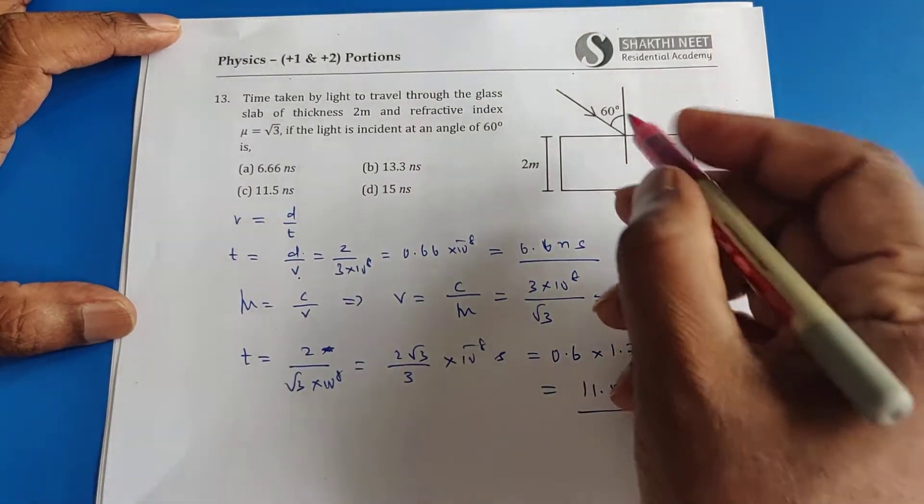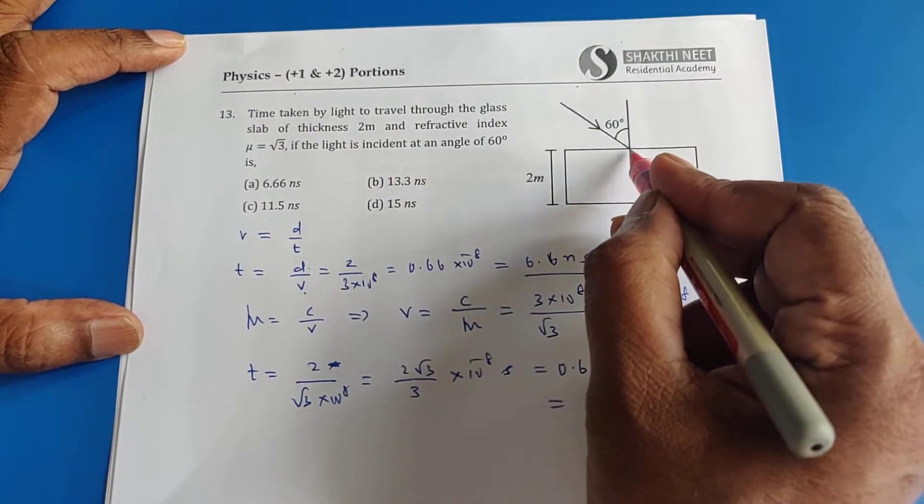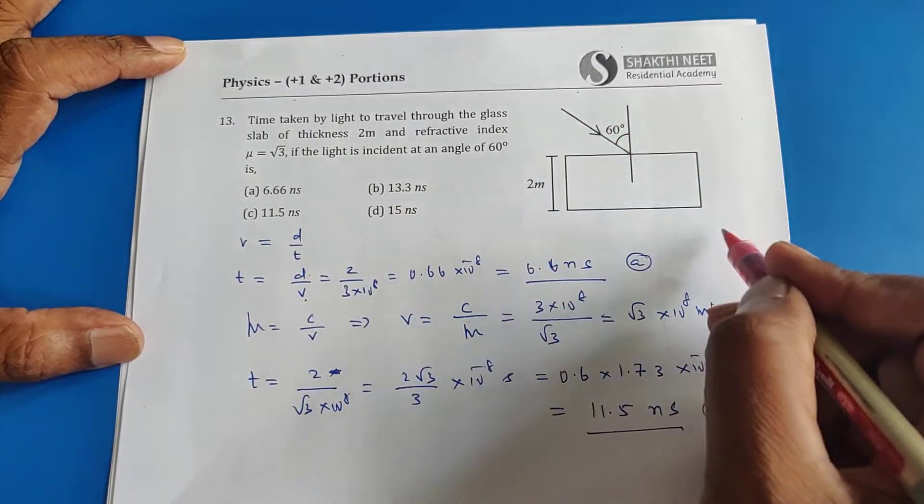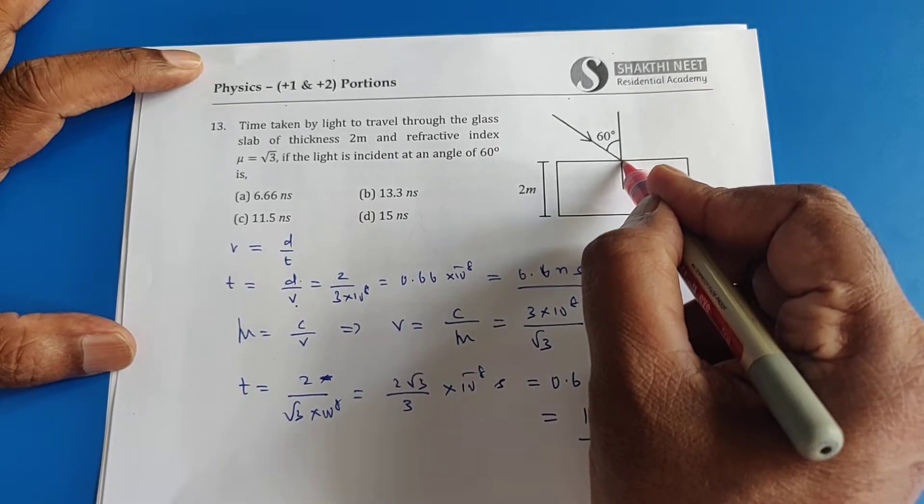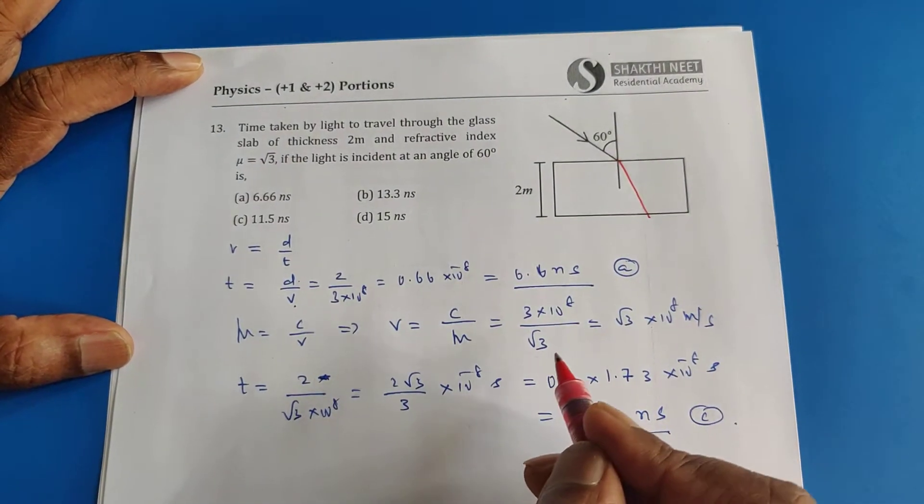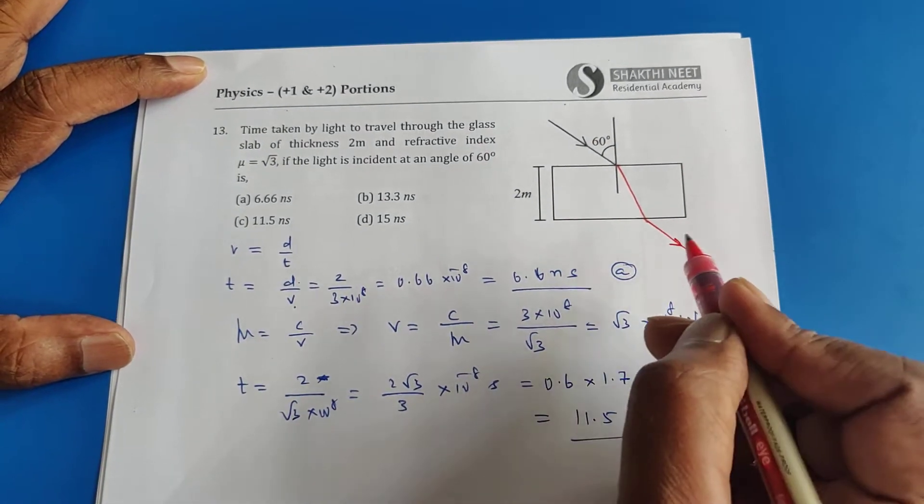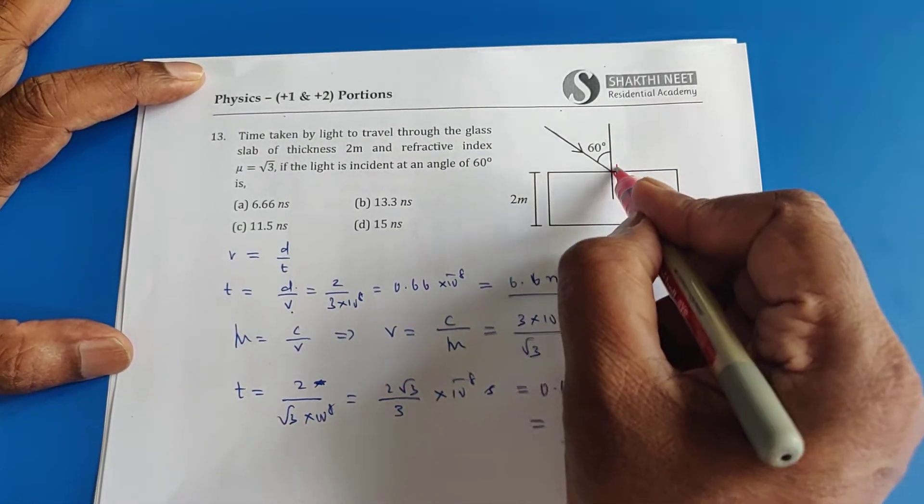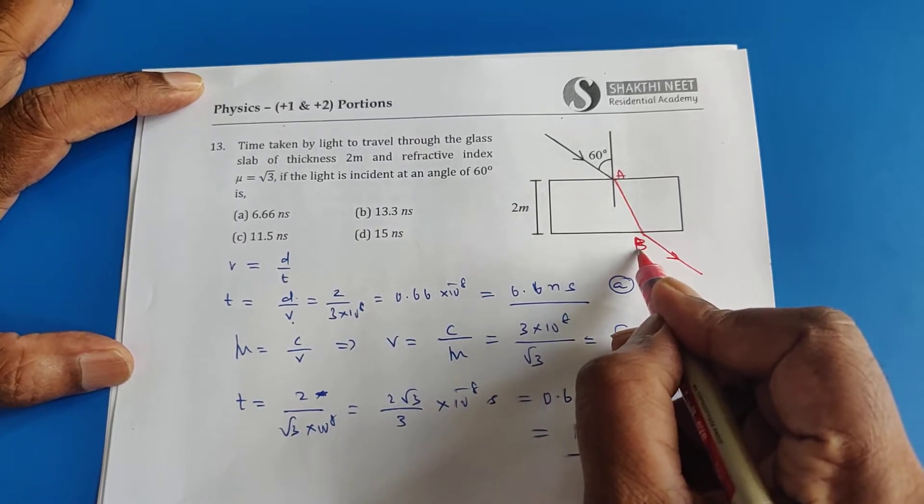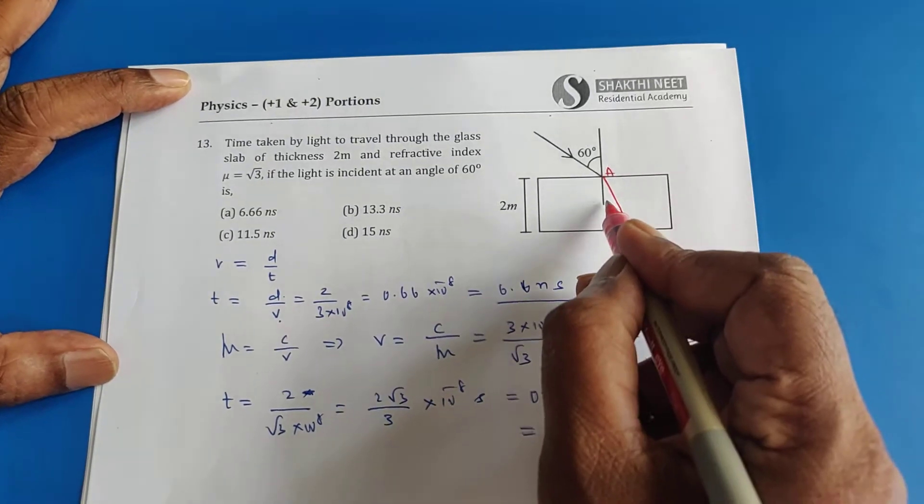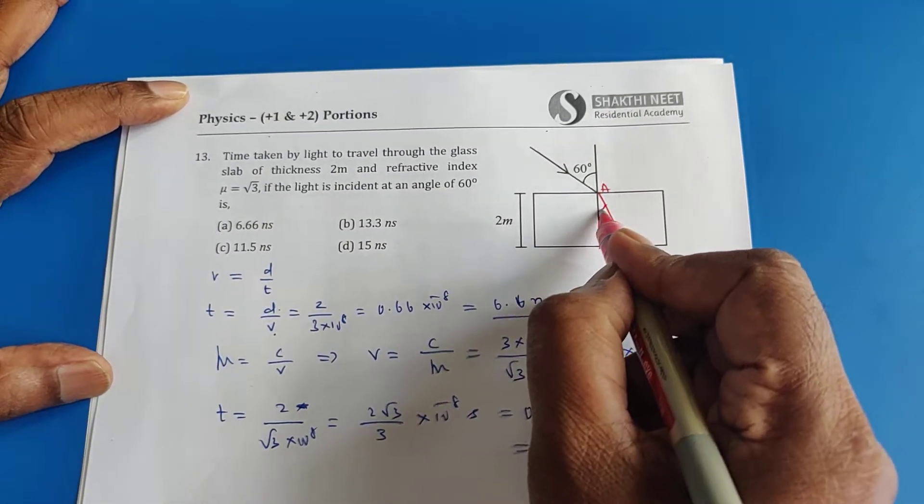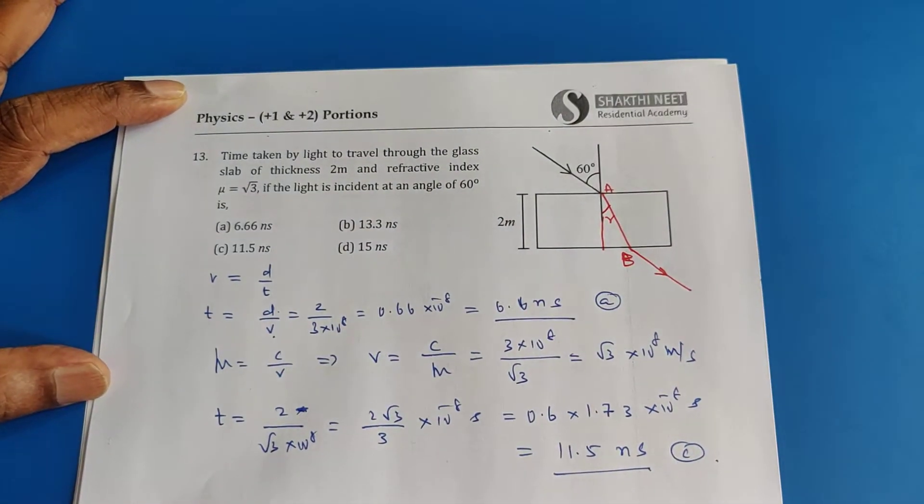What exactly is the distance? Light will not travel through this line or go straight. It will go in the refracted path, then it will go in this direction. We should find if this point is A, this point is B, we should find this distance AB.